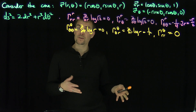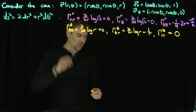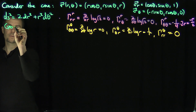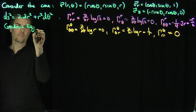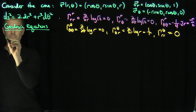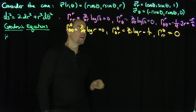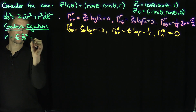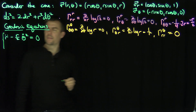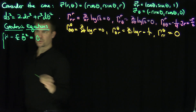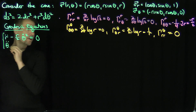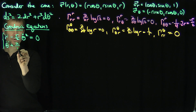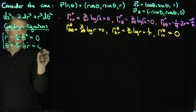Those are all my Christoffel symbols. Using orthogonal curvilinear coordinates, I've computed them quickly because there are no mixed terms. Now let's write down the geodesic equations. I have r̈ minus (r/2) θ̇² = 0, and then θ̈ + (2/r) θ̇ ṙ = 0.